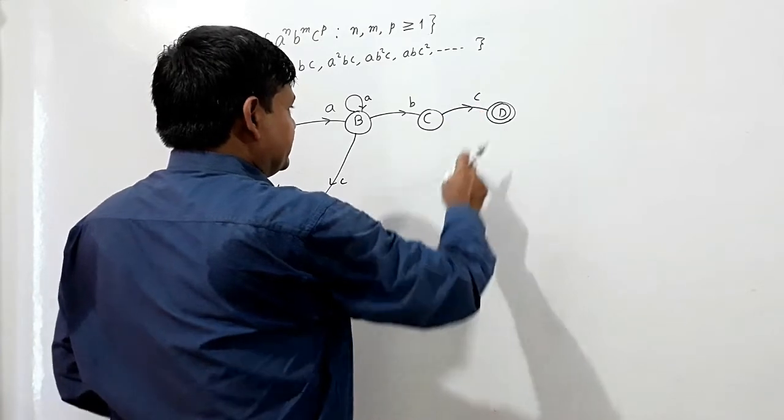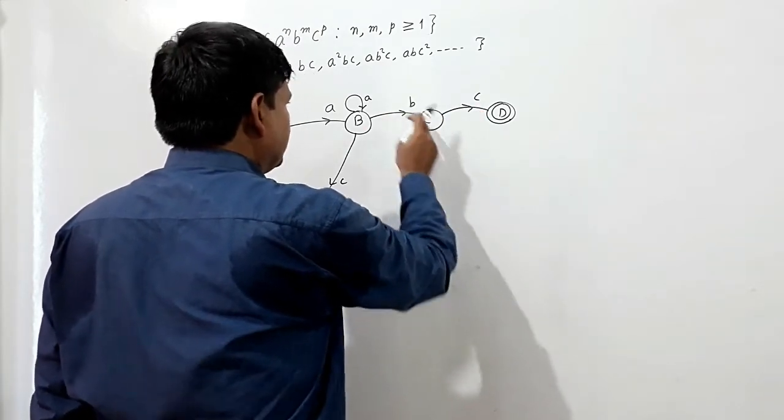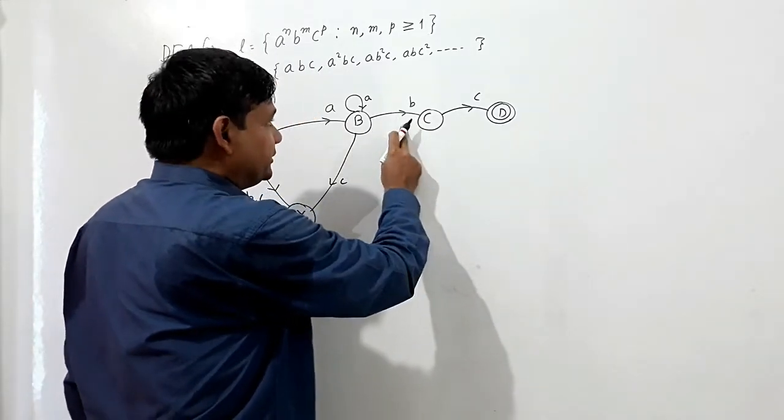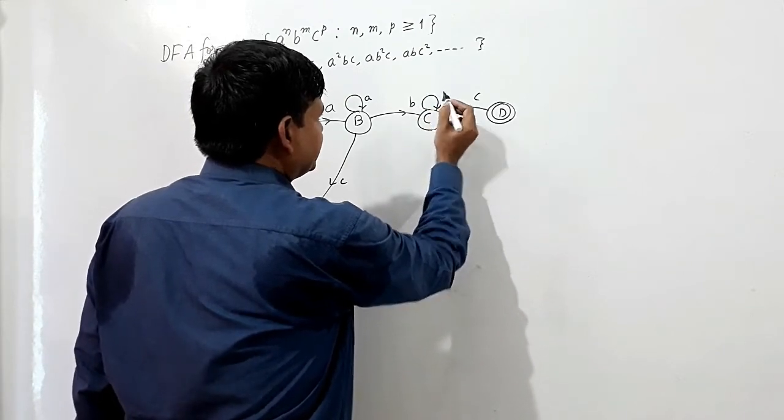I have shown the transition at C. If B comes, if I get any number of times B, I should remain in this state.